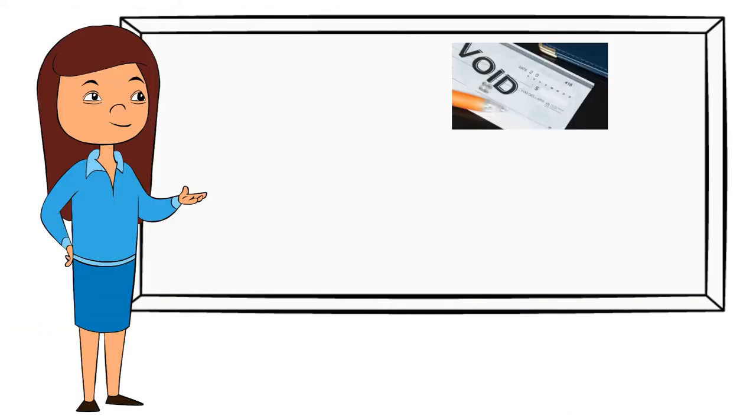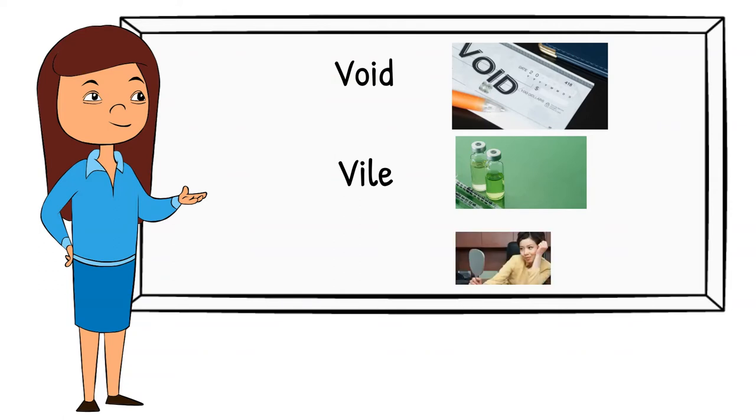Void. This is a picture of a check that has void written on it. It can mean something is no longer good or something is hollowed out. There's nothing there. It's void. Vial. These vials have a vaccine in them. Vain. Someone who thinks a whole lot of themselves in a negative way.